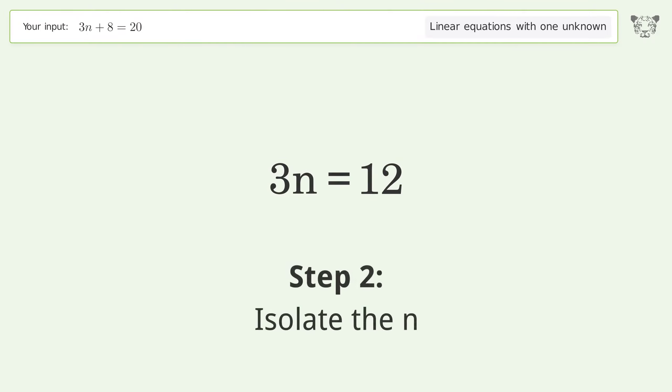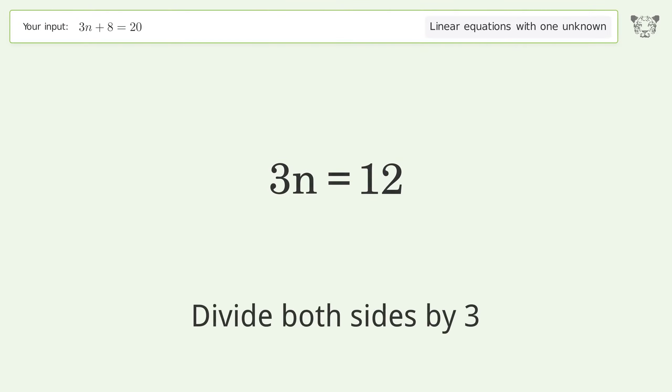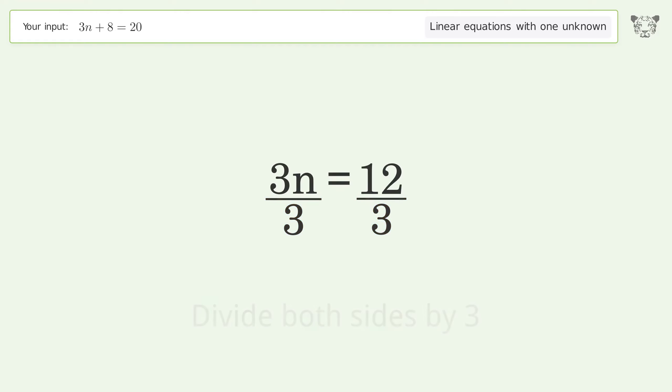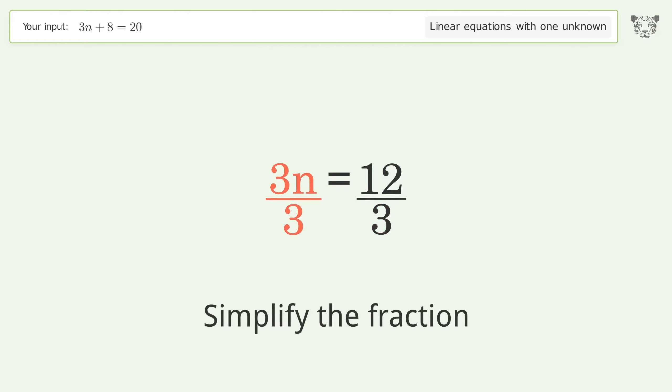Isolate n by dividing both sides by 3, then simplify the fraction.